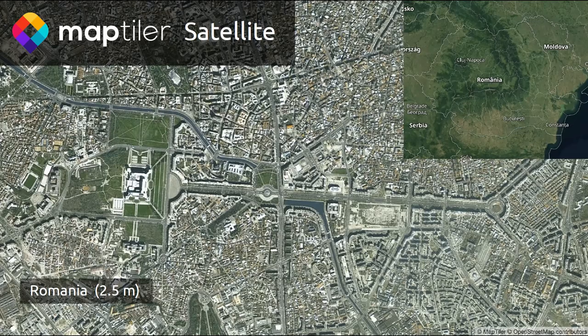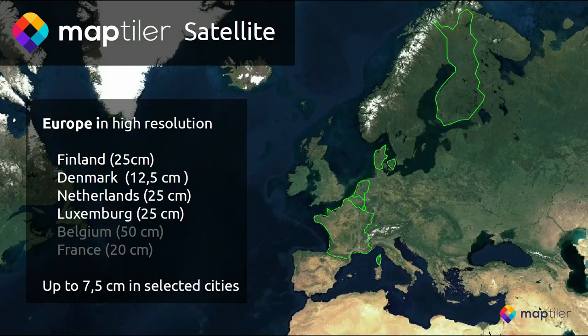For example, you can see Romania at 2.5 meters here. We are also gradually adding high-resolution imagery from around 20 centimeters down to 7 centimeters in selected cities. Finland, Denmark, Netherlands, and Luxembourg are already available; Belgium and France are in the pipeline, with more countries coming soon. This imagery is seamlessly integrated — you can't even notice sometimes that you are zooming from Sentinel to SPOT maps to aerial imagery, thanks to color tuning. For example, Amsterdam at 25 centimeters and Copenhagen at 12.5 centimeters.